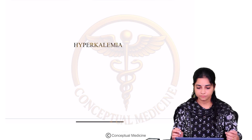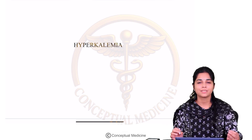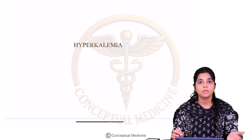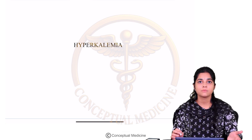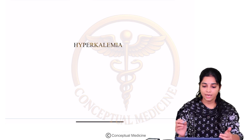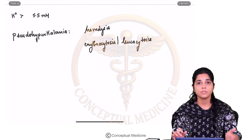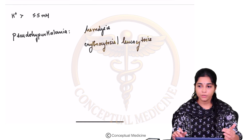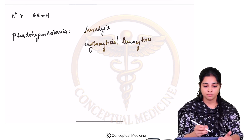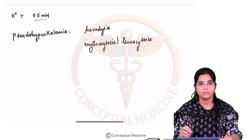Hello everyone, welcome back. In the last session, we learned about the group of potassium disorders which is hypokalemia. In today's session, we will be learning about hyperkalemia. The normal potassium is between 4.5 to 5.5, so whenever potassium levels are more than 5.5 millimoles per litre, we call it hyperkalemia.